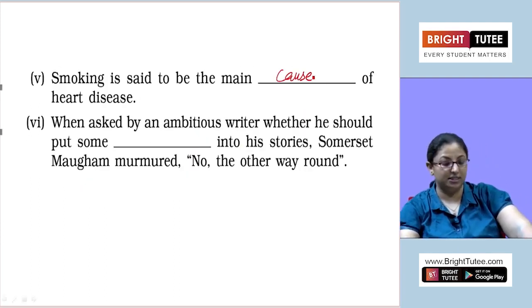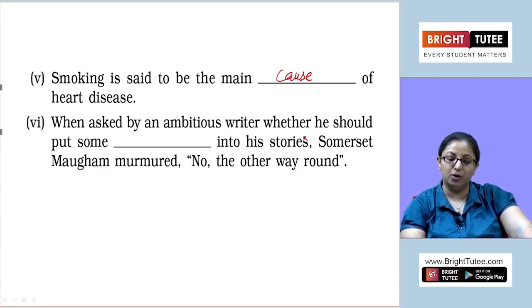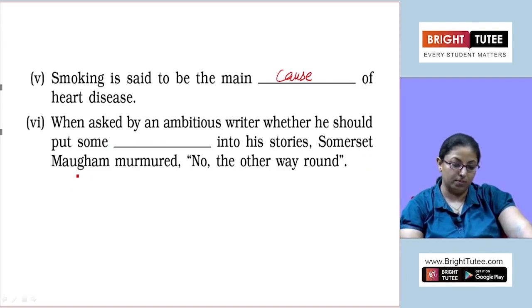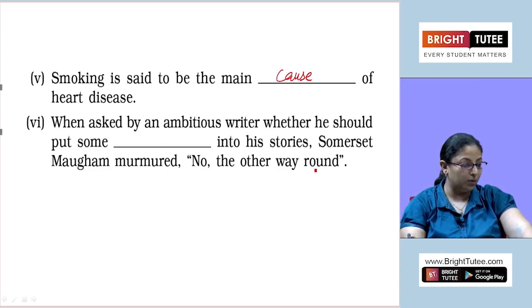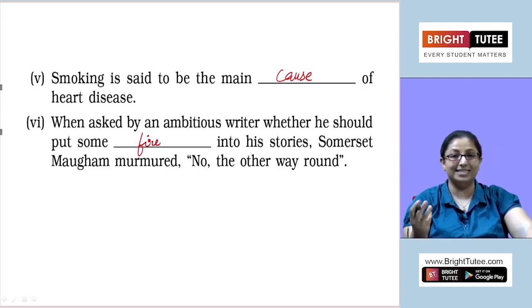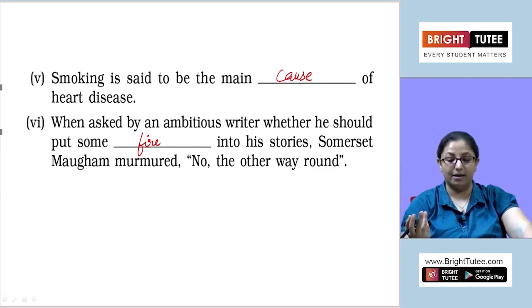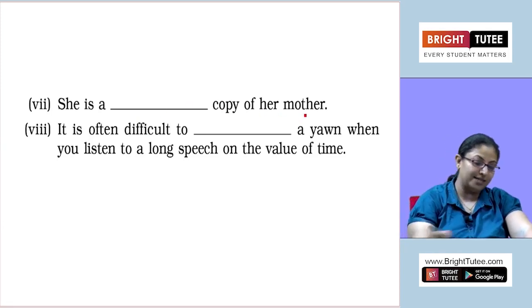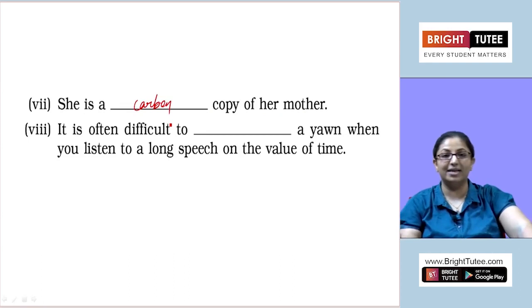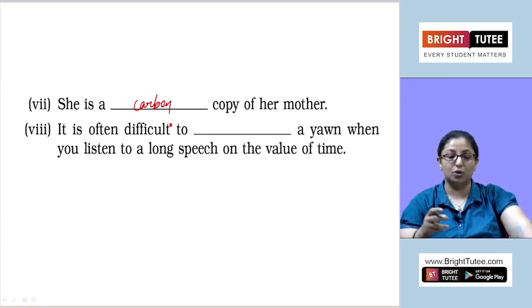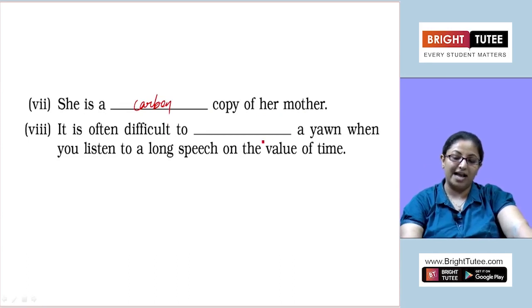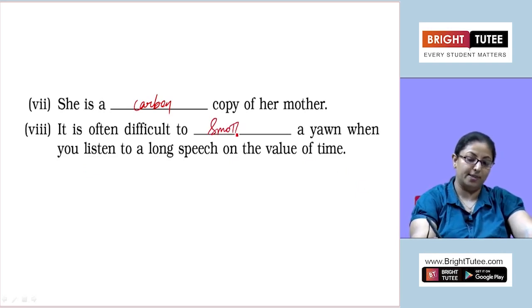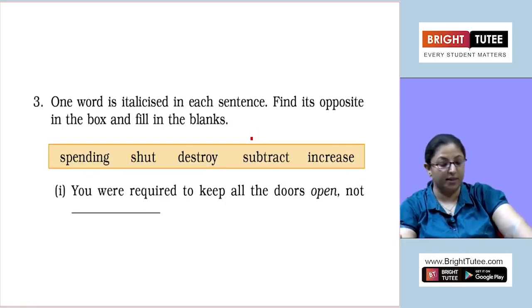When asked by an ambitious writer whether he should put some ___ into his stories, Somerset Maugham murmured 'no, the other way round' — meaning put some fire, some interesting element, into his stories. She is a ___ copy of her mother — carbon copy. It is often difficult to ___ a yawn when listening to a long speech — smother a yawn.